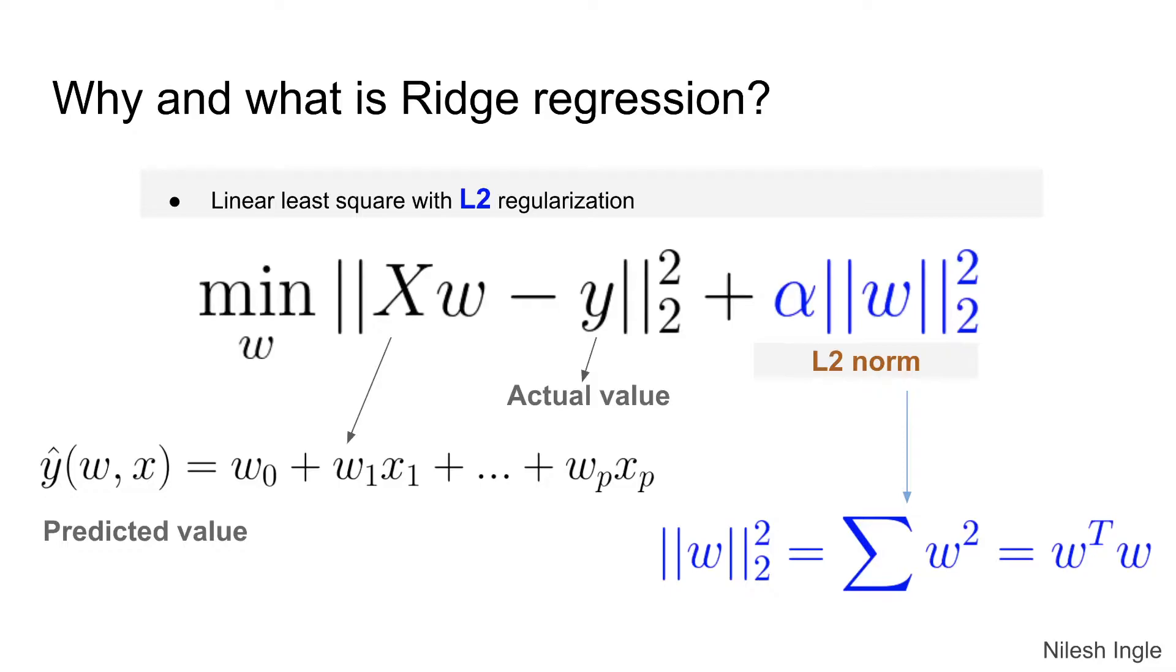If you remember the previous two videos on norms and ordinary least squares, we looked at this first part of the equation which shows the objective function for residual sum of squares that we need to minimize. What that means is we are trying to reduce the difference between the actual value which is y and the predicted value which is shown here as xw. So xw is the equation that we have here where the parameters w are linearly related to the features x.